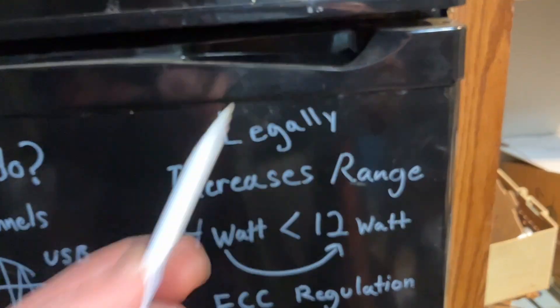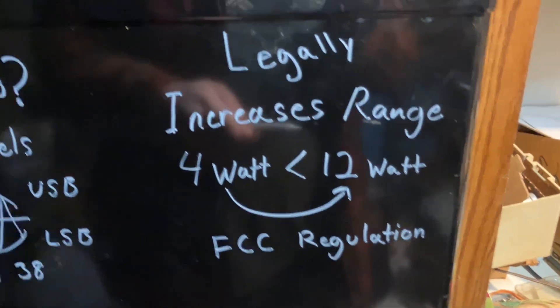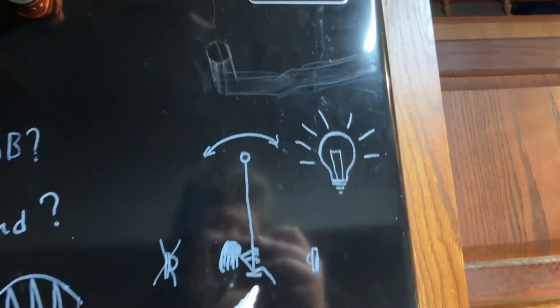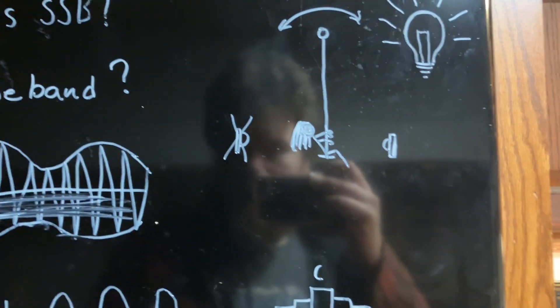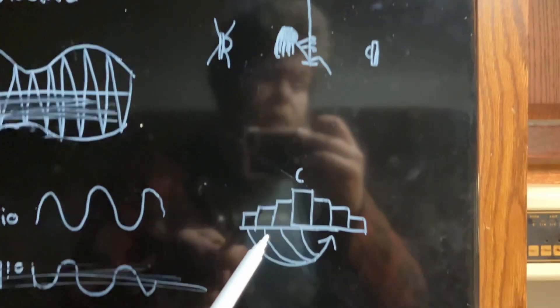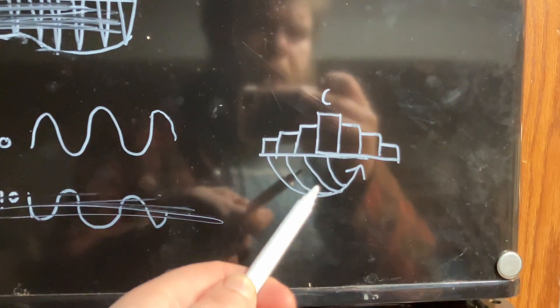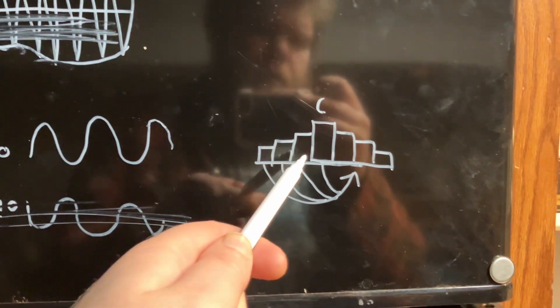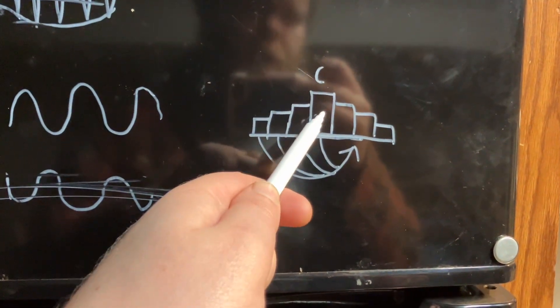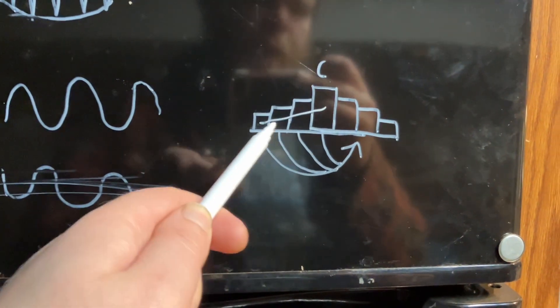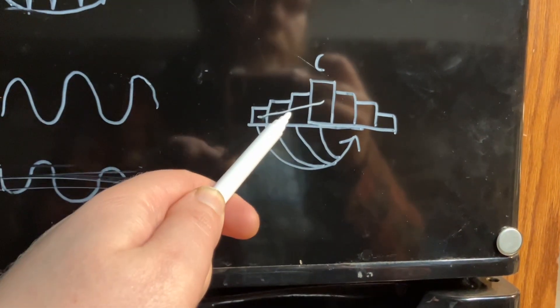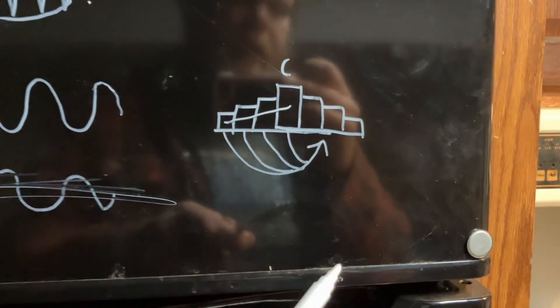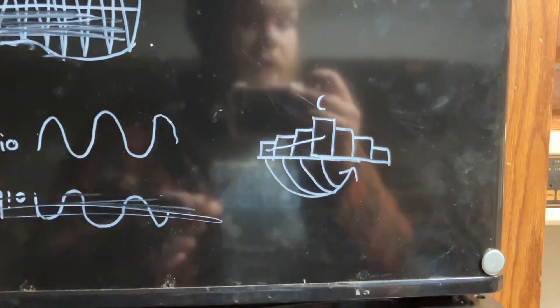What that looks like on a frequency domain chart is we're taking all the frequencies including the carrier, and we are just getting rid of them. We're putting all the power in those frequencies on our single sideband, which increases the range tremendously.